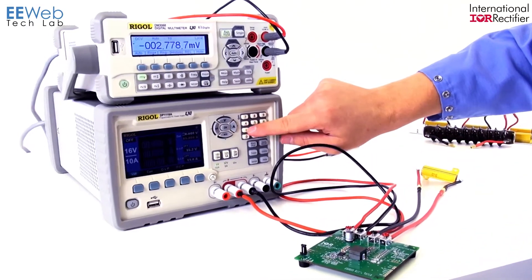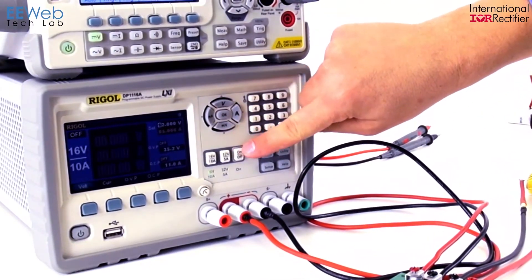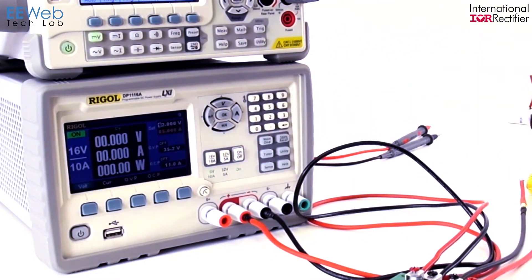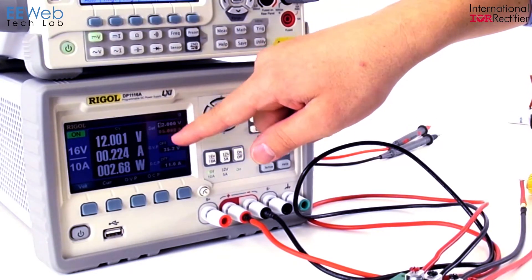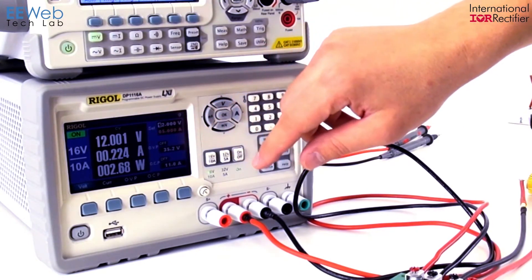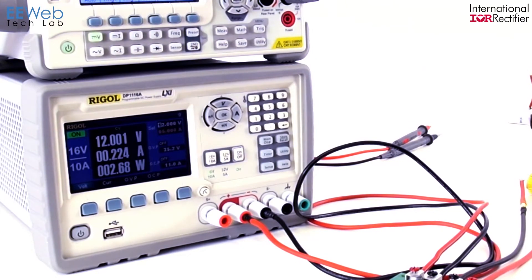We'll set our power supply for 12 volts. I'll turn on the output, and you can see that the source is supplying a little under a quarter of an amp, and that works out to be 2.68 watts.